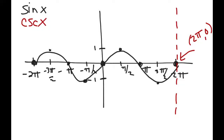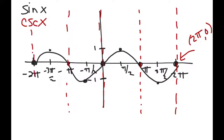The asymptote happens again at 1pi, because the sine of 1pi is 0 and the reciprocal of 0 is undefined. It happens again at the y-axis at x equals 0, again at x equals negative pi, and again at x equals negative 2pi. So on the sine graph, wherever the graph hits the x-axis, on the cosecant graph the reciprocal of 0 is undefined — creating an asymptote.